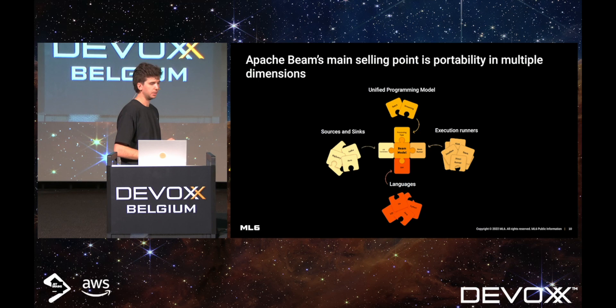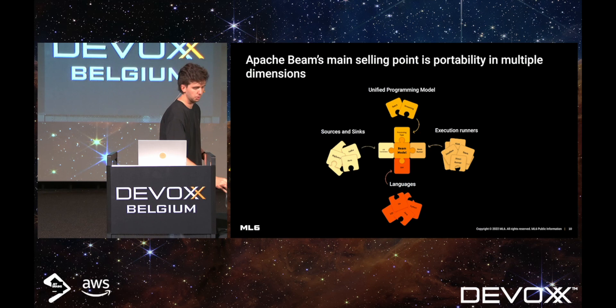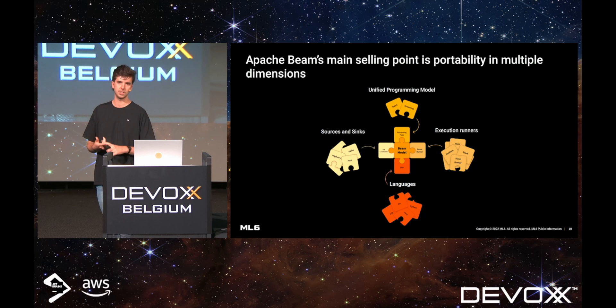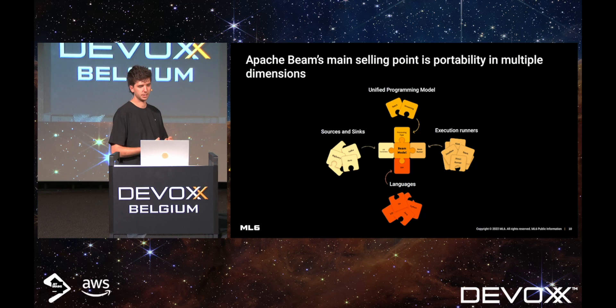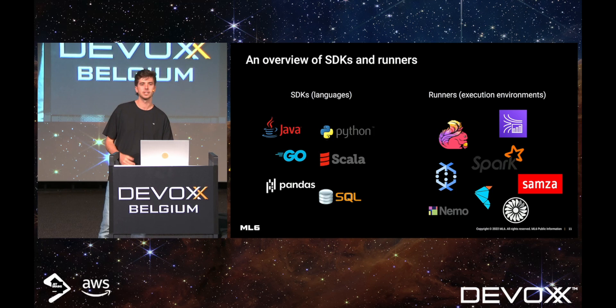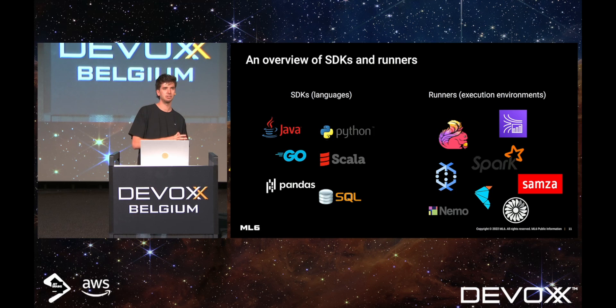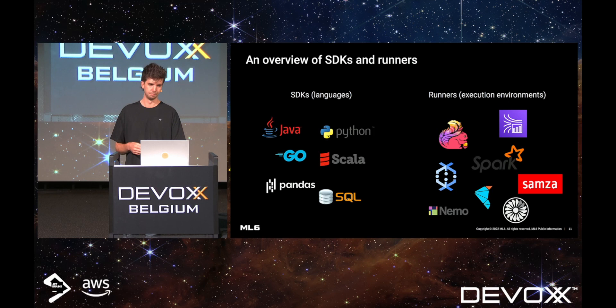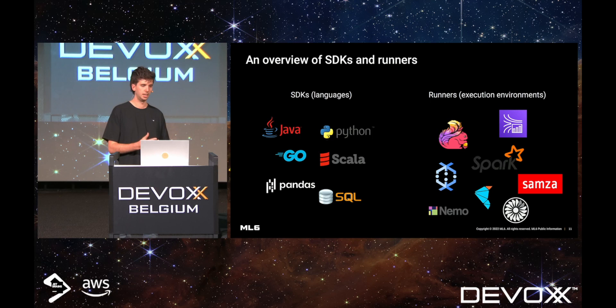If we look a bit closer into this portability, we can see it's in multiple dimensions. We have the unified programming model for streaming and batch, but there's also a lot of sources and sinks you can use to connect to databases to read or write. There are different languages — currently Java, Python, Go, and Scala — and two more special ones: Pandas, which provides the DataFrame API that Beam has adopted, and you can even define your pipelines using SQL. You can run it almost everywhere you want — Flink, Spark, Google Cloud Dataflow, Amazon Kinesis, Samza, Twister, Nemo, and Hazelcast — so that's quite a lot of choices on where you can run your pipelines.